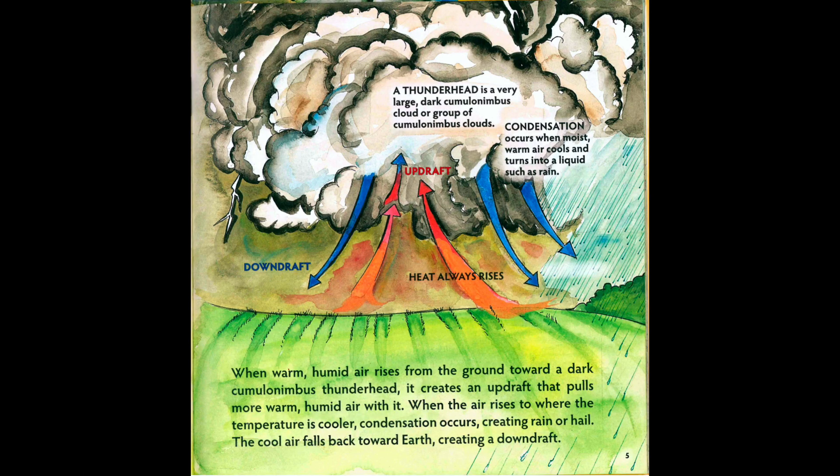When warm, humid air rises from the ground toward a dark cumulonimbus thunderhead, it creates an updraft that pulls more warm, humid air with it. When the air rises to where the temperature is cooler, condensation occurs, creating rain or hail.